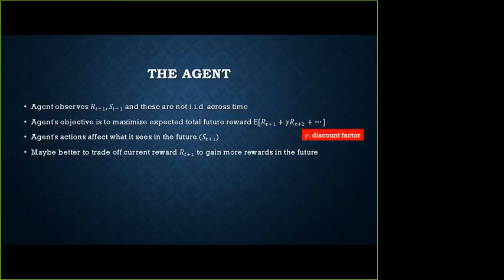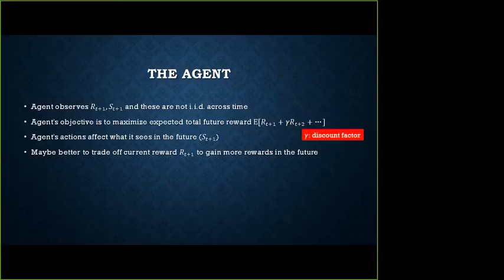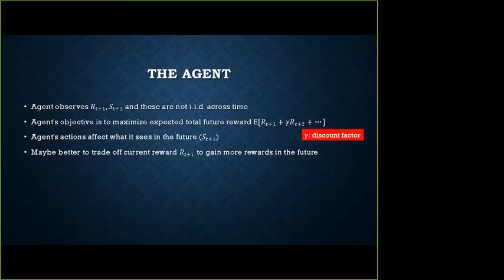Q: Are you assuming there is a distribution of rewards given state? Yes — given a state and given an action, there is a distribution on the rewards. Q: Is this invariant over time? It can be variant over time. The whole framework is about trial-and-error based learning, so if the environment changes, since you're trying and learning things, you can adapt. Similar to online learning — you don't have to assume distributions on rewards are fixed; they can be a moving target. The guarantees are given in terms of fixed targets, but it's random, not adversarial.